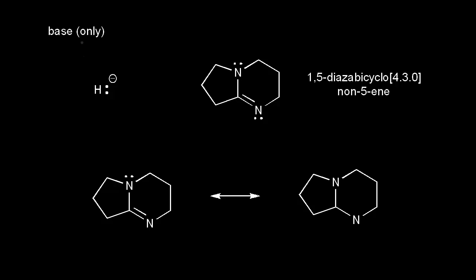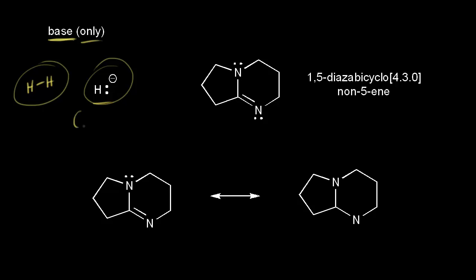The second category is when your reagent only functions as a base and not a nucleophile. An example of that would be the hydride ion. We've already seen why the hydride ion does not function as a nucleophile, but now let's talk about why it's a strong base. If you think about the conjugate acid — add an H+ to H minus and you get H2. We know that H2 is a very stable molecule, which makes it a very weak acid. And the weaker the acid, the stronger the conjugate base, which makes the hydride anion a very strong base. If you see it in a reaction, think base only. You would get the hydride ion from something like sodium hydride, so NaH would be your source.